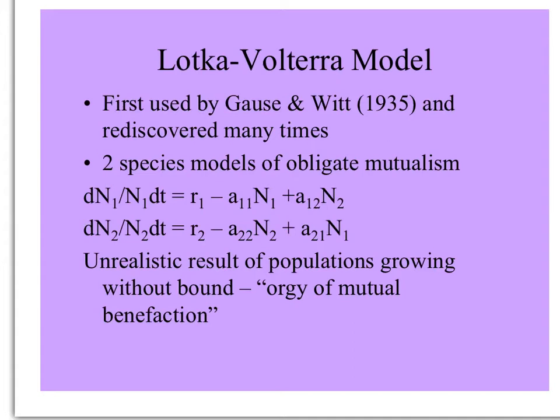The Lotka-Volterra model was modified for mutualism by Gause and Witt and rediscovered many times. There were two-species models of obligate mutualism, N1 and N2. For each species, the intraspecific competition term reduced the population size, but then the benefit term A1,2 — the effect of species 2 on species 1 modified by the density of species 2 — and the other way for species 2, benefiting from the presence of species 1.